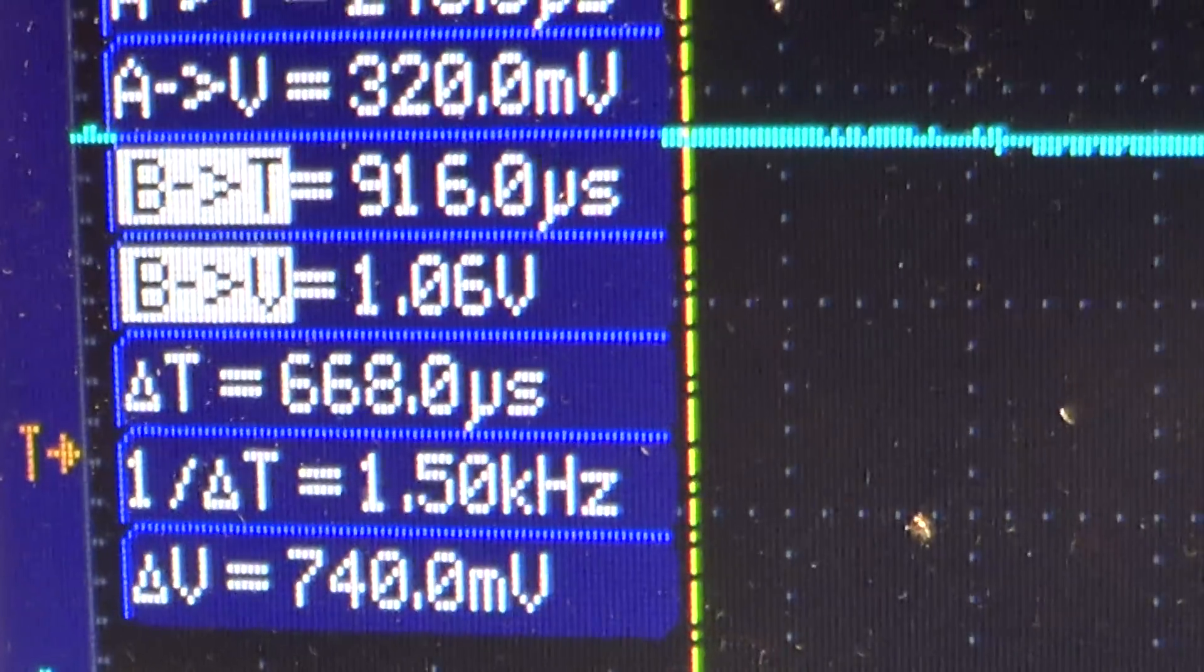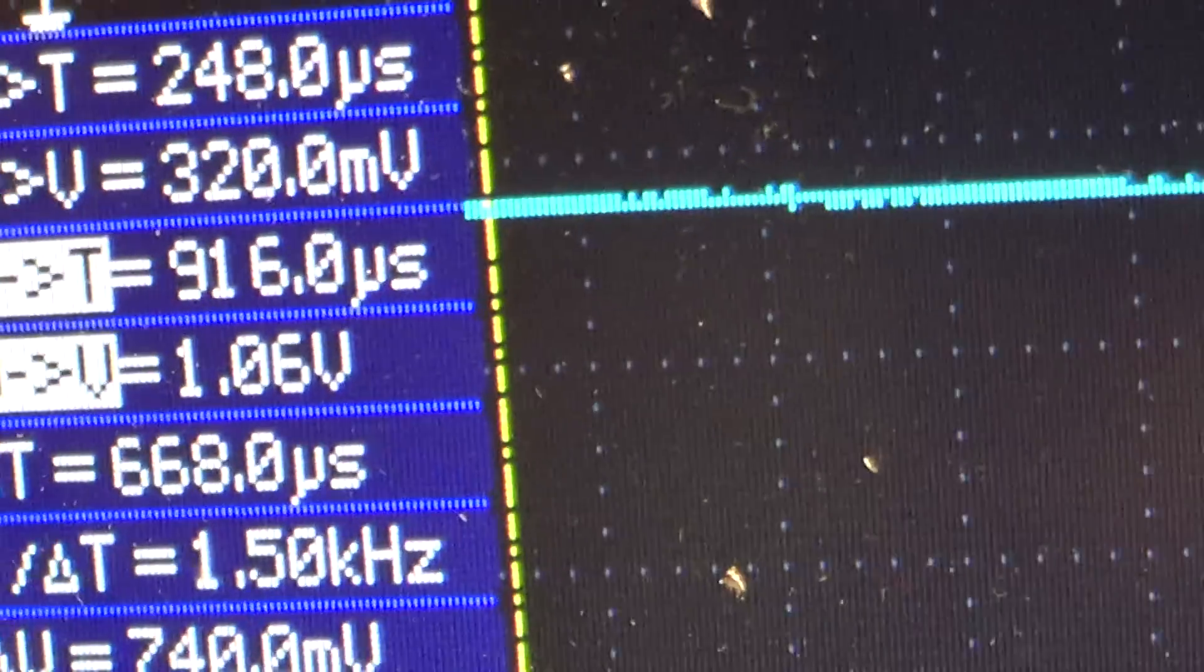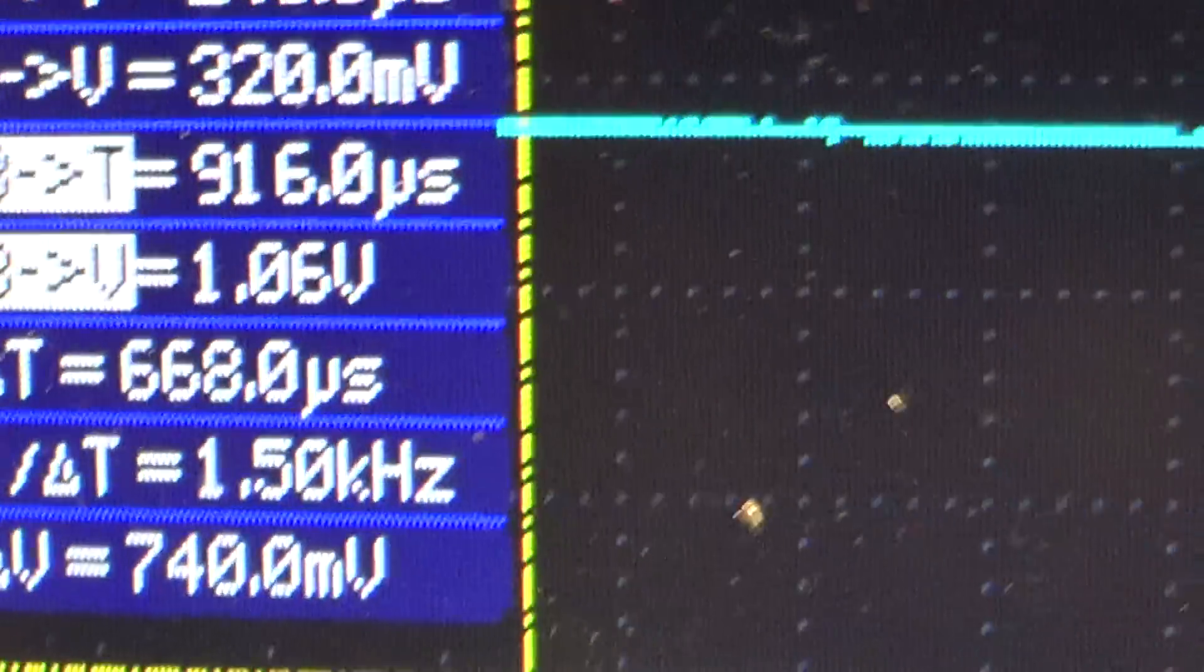So 59 amps divided by 668 microseconds is about 89,000 amps per second rise rate.